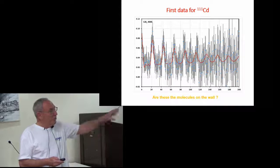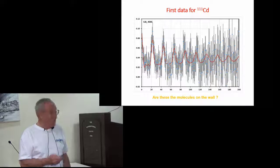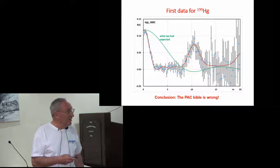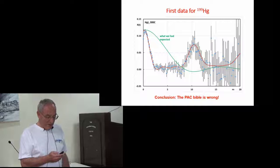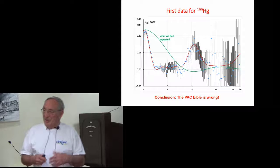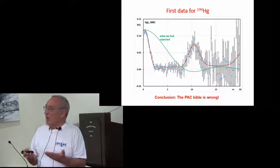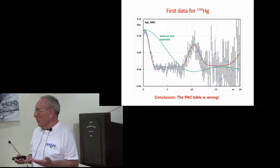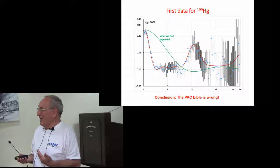We then, a few days later only, did the corresponding mercury experiment, and again we saw something which was completely different from what we had expected. But here the volatility is so high that it was very improbable that these things were sitting on the wall. But what is the answer?